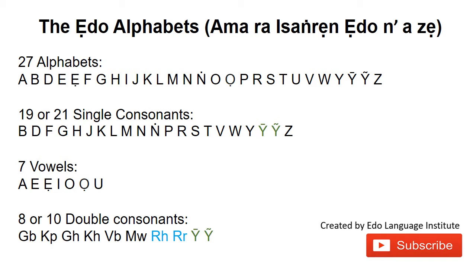In total there are 27 alphabets in the EDO language, and those can be broken down into 19 or 21 single consonants and seven vowels, and we have eight or ten double consonants. I want to take your attention to the single consonants and the double consonants and why that is.